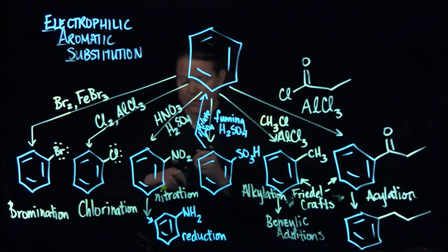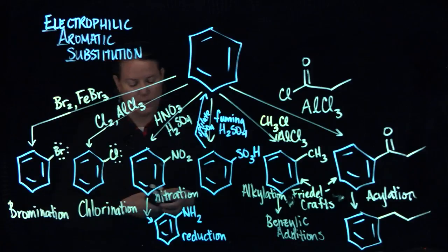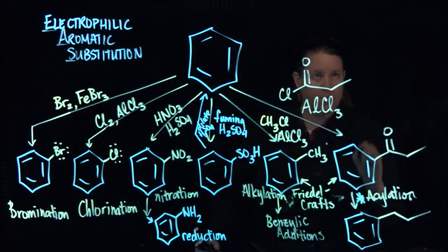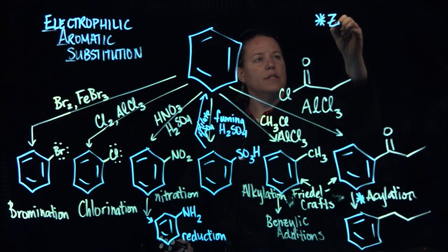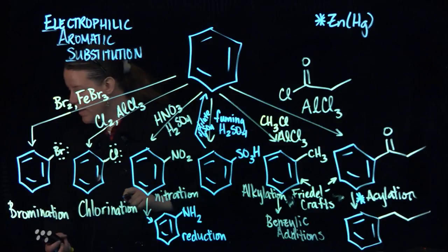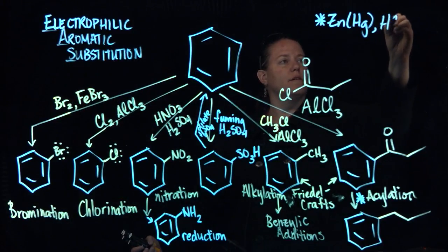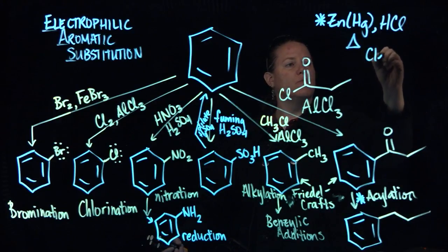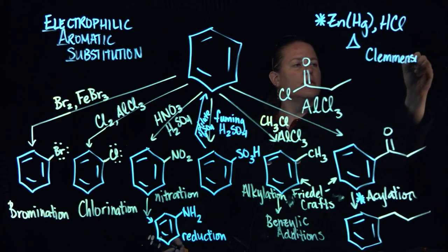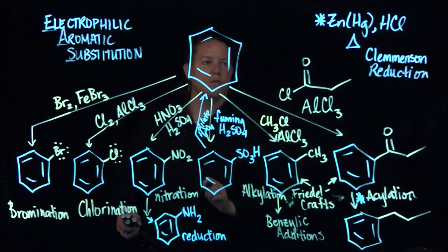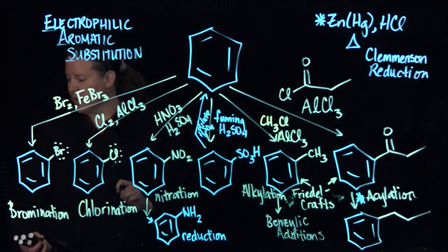It's called a Clemmenson reduction, and it takes zinc to be able to make this work. I'm going to put a star right here. That takes zinc with Hg, and then it takes HCl and heat. And that is called a Clemmenson reduction. Very useful for several kinds of reactions.